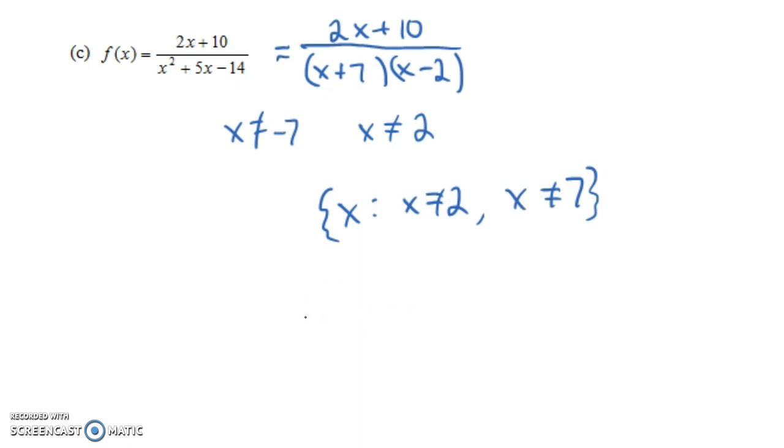And in interval notation this would be the interval from minus infinity all the way up to 2, union with the interval from 2 to 7, union with the interval from 7 to infinity. So if you thought on a number line you'd have the whole interval on the number line from minus infinity to 2 but it would not include 2 itself. And then you have the interval from 2 to 7, again not including 2 and not including 7, and then finally you have another interval from 7 to infinity not including 7. So this would be the domain of the function expressed in interval notation, whereas this is the domain of the function expressed in set builder notation.